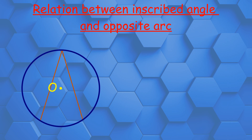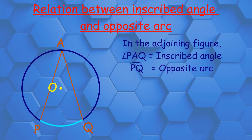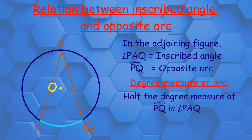The inscribed angle is opposite to arc PQ. In this figure, arc PQ subtends angle PAQ at the circumference of the circle. So angle PAQ is the inscribed angle, and arc PQ is the opposite arc. The degree measure of the inscribed angle PAQ is half the degree measure of arc PQ — that is, half times arc PQ equals the degree measure of angle PAQ.